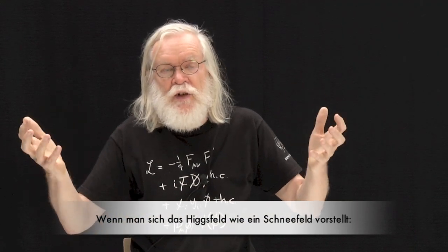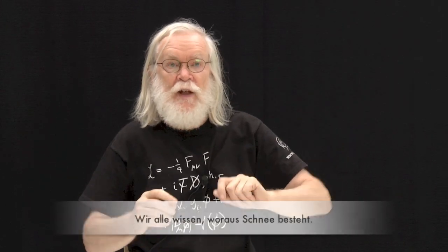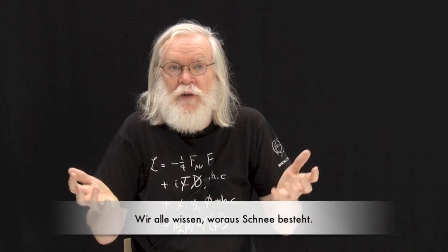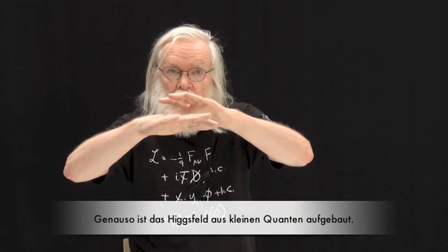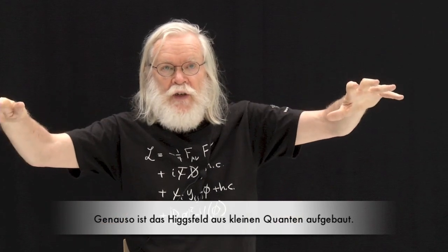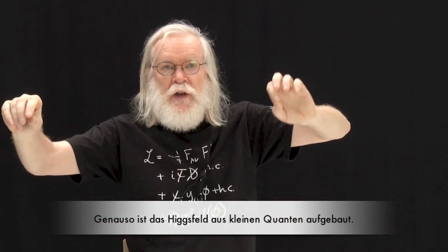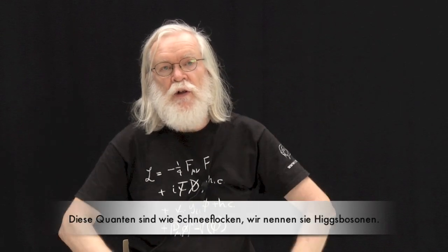Think of this Higgs field as being like this universal field of snow. Now, where does the Higgs boson come in? Well, we all know what snow is made of — it's made out of snowflakes. In the same way, this universal Higgs snowfield is made up out of little quanta. Those quanta are like snowflakes — that's what we call the Higgs boson.